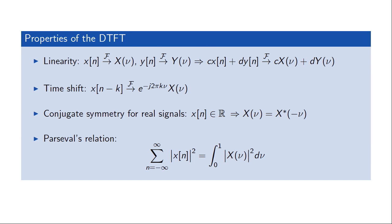There are several properties derived more or less directly from the definition of the transform. Probably the most important is the linearity property, which states that if we have two signals x[n] and y[n] with respective transforms X(ν) and Y(ν), then a linear combination of the two signals has a transform that is simply the linear combination of the respective transforms. Another property is the time shift property, which says that if we shift a signal x[n] in time by an amount k, the effect on the transform is simply multiplication by a complex exponential where k appears in the exponent.